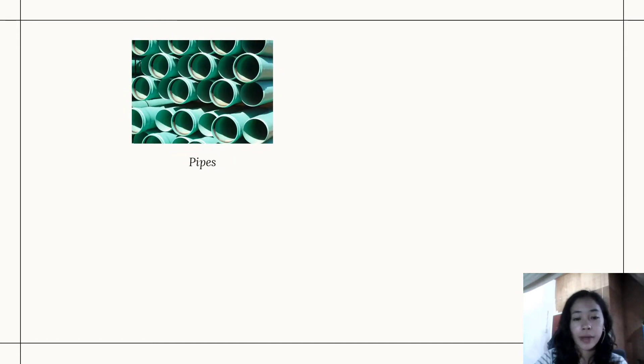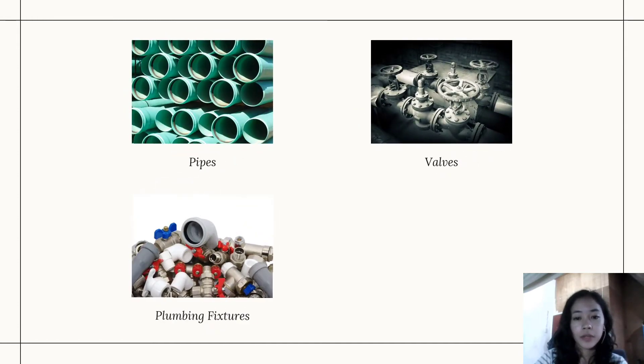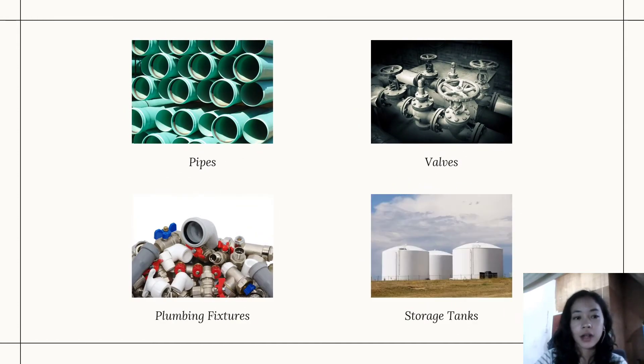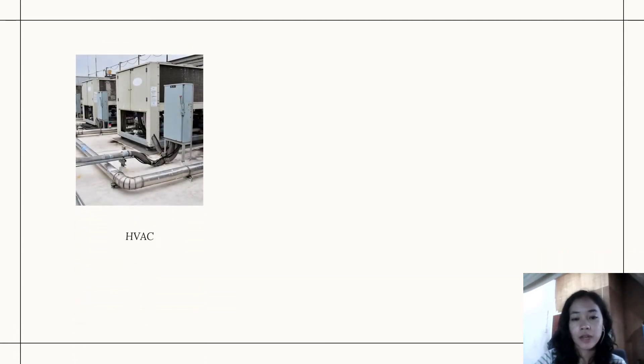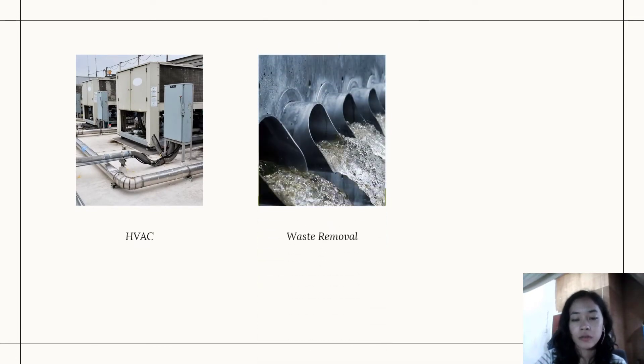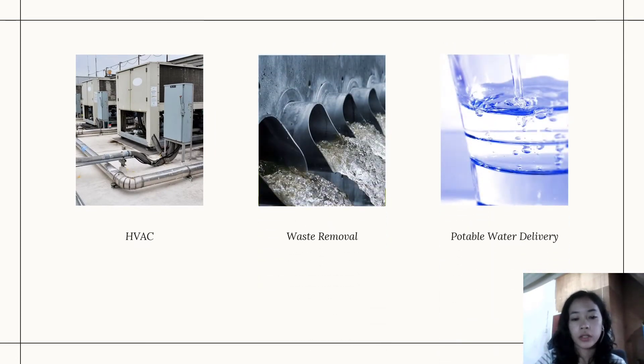Plumbing uses a variety of apparatuses. Pipes, valves, plumbing fixtures, and tanks are just some of its common examples, and these will be thoroughly discussed by the succeeding reporters. Let me also present to you some examples of plumbing applications. Through plumbing, the following applications can be made: HVAC systems, waste removal systems, and potable water delivery.